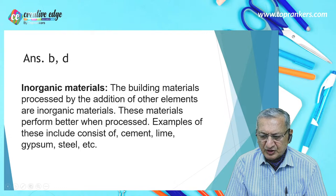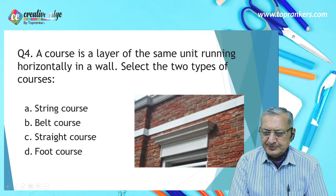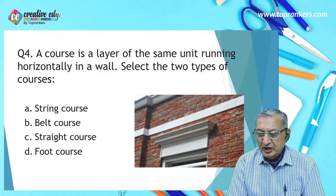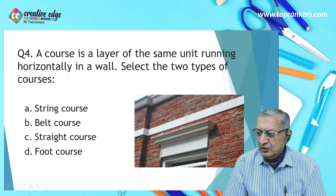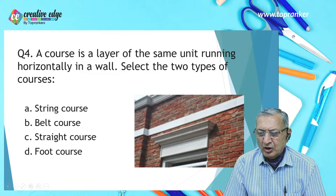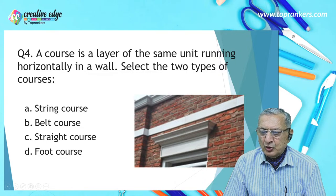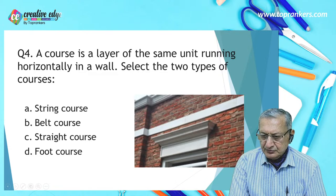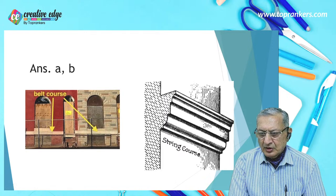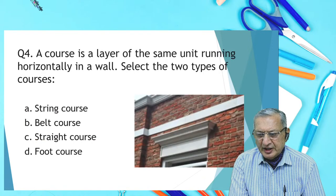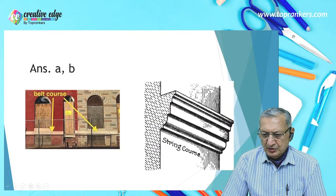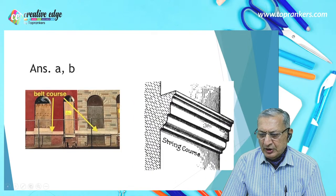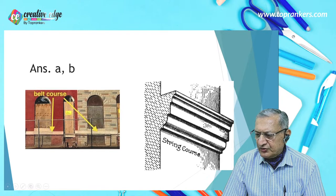A course is a layer of the same unit running horizontally in a wall. You must select two types of courses from: string course, belt course, straight course, and foot course. Here is an example of a belt course, and here is an example of a string course.